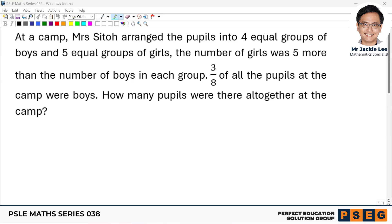In this question, Mrs. Sito arranged the pupils into four equal groups of boys and five equal groups of girls. The number of girls was five more than the number of boys in each group. Three over eight of the pupils were boys. So the question is, how many pupils altogether?